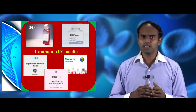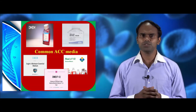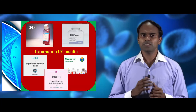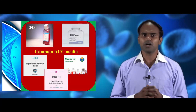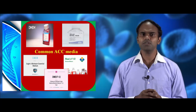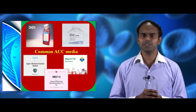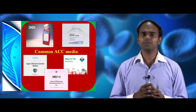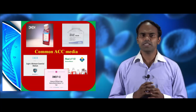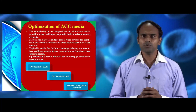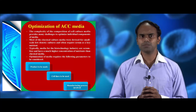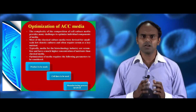Now we see about the most commonly used animal cell culture media. There are many media used to grow and proliferate animal cells and tissues. The widely used ones include Dulbecco's Modified Eagle's Medium (DMEM), RPMI 1640, Eagle's Minimal Essential Medium (MEM), HAMS F12 and the DMEM/F12 combination.